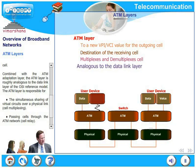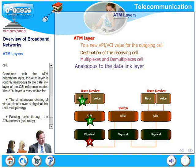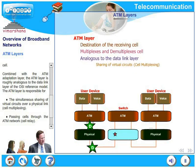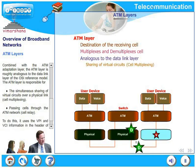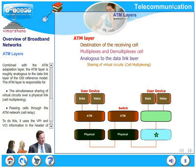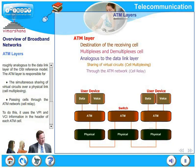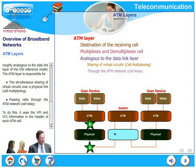The ATM layer is responsible for two things. The first is the simultaneous sharing of virtual circuits over the physical link, which is called cell multiplexing. The second is passing cells through the ATM network itself, which is called cell relay. To do this, it uses the VPI and VCI information in the header of each ATM cell.